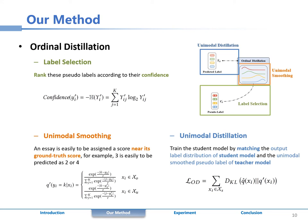Unimodal distillation minimizes the KL divergence between the predicted label distribution of the student model and the unimodal smoothed label distribution of the teacher model.